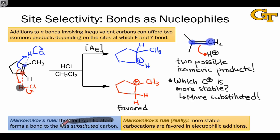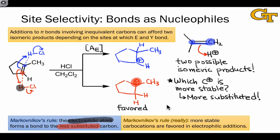In this particular example, the electrophilic atom coordinates to the less substituted carbon, leaving positive charge on the more substituted carbon. There are anti-Markovnikov additions overall in which the opposite selectivity is apparently observed, but there are good mechanistic explanations for anti-Markovnikov reactions as well. These don't involve carbocationic intermediates.